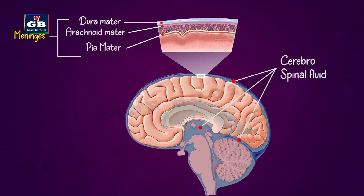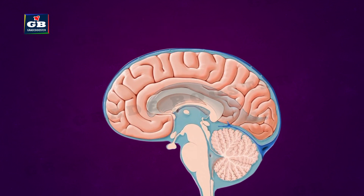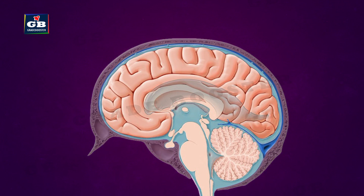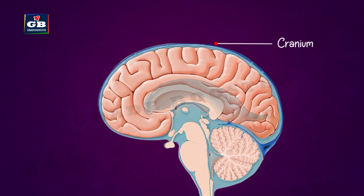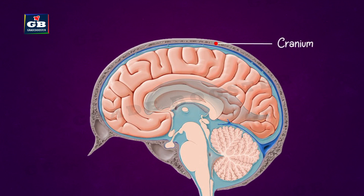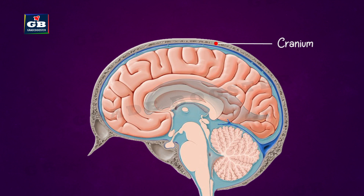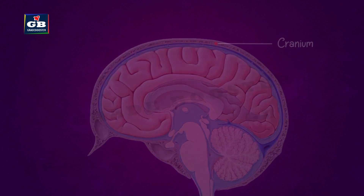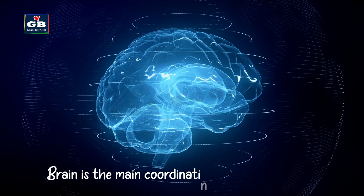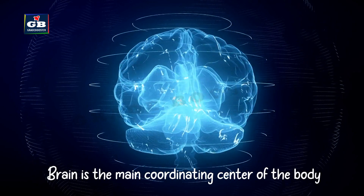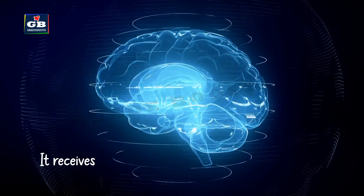These layers and the fluid protect the brain from shocks and injuries. The brain, along with the meninges, is protected by an outer bony case called the cranium. The cranium is a hard structure made up of bone.